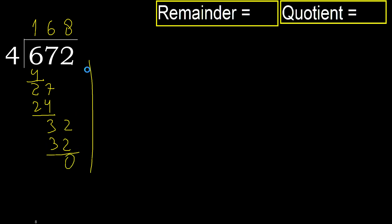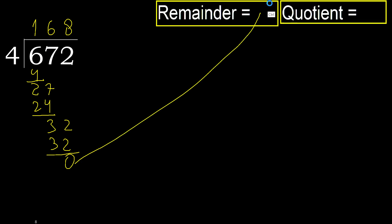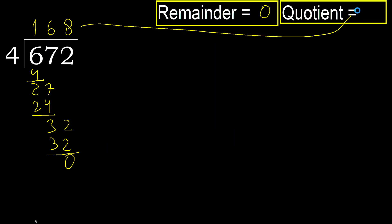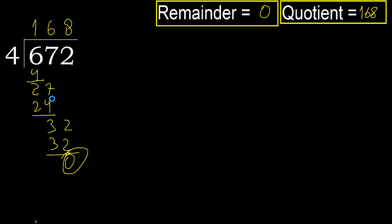Next — there is no number remaining, so we finish. The remainder is 0. Therefore, 672 divided by 4 is 168.